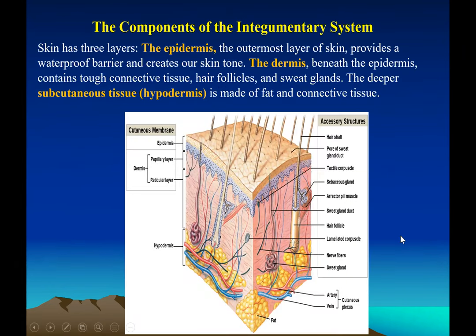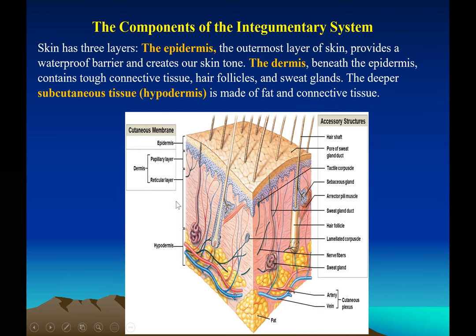There are three main layers in the skin. Here's a cross section showing the epidermis, followed by the dermis, and then the hypodermis. Each of these layers is made up of sub-layers: the epidermis has several layers, the dermis has a papillary layer and a reticular layer, and the hypodermis or subcutaneous layer contains a lot of fat and large vessels. In the dermis you can see the hair follicle and a sweat gland. The epidermis is made up of epithelial tissue and the dermis is connective tissue.